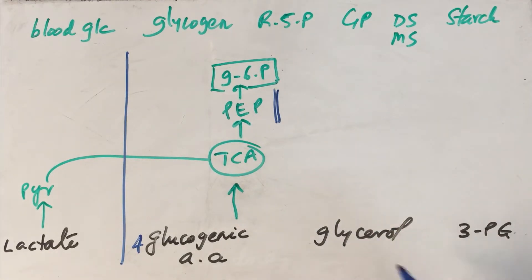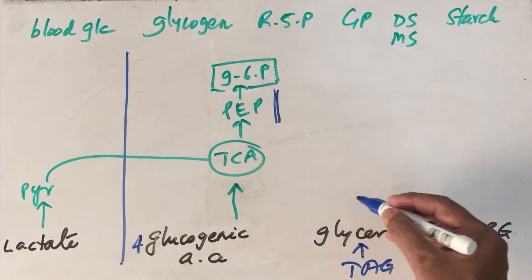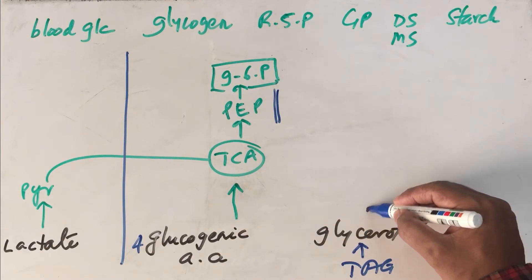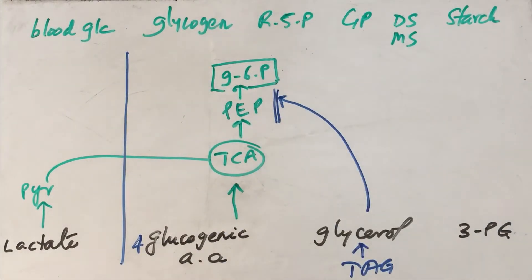Glycerol is another molecule. So basically glycerol comes from triacylglycerol metabolism. So this glycerol also becomes part of this pathway. Then it becomes fructose 1,6-bisphosphate. That way it can be converted finally to glucose 6-phosphate.